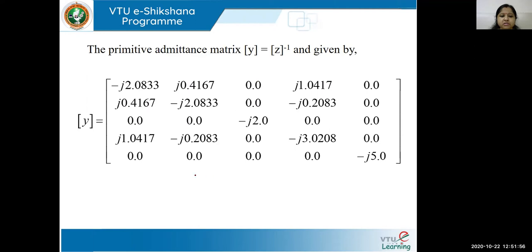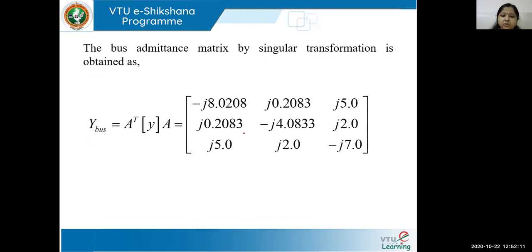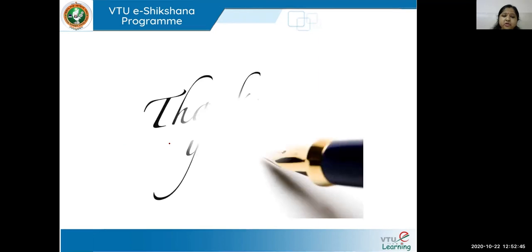With the Y primitive known, we compute Y bus as A-transpose times Y-primitive times A to get the final answer. Please try to verify this by going from Z primitive, taking the inverse to get Y primitive, then applying singular transformation to get Y bus. I hope you have understood the concept of mutual coupling in forming Y bus using the singular transformation method. Please solve more problems to better understand the concept. Thank you, have a nice day.